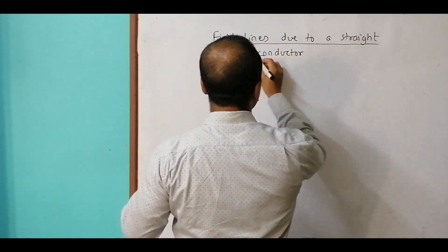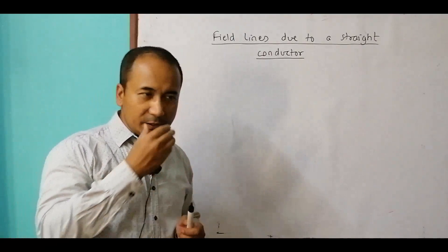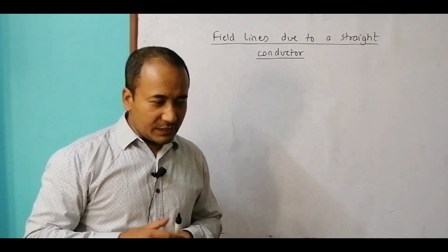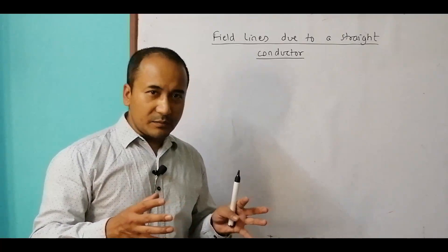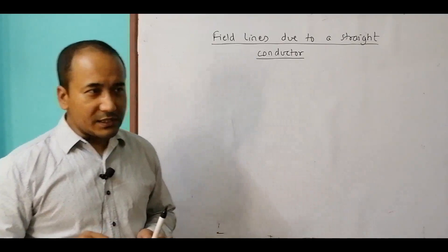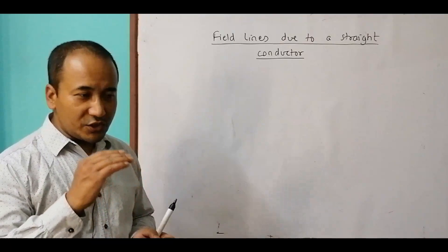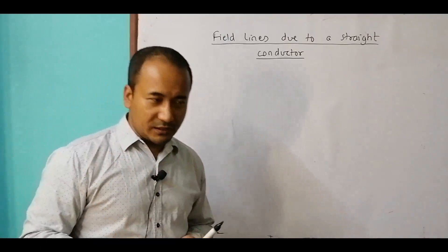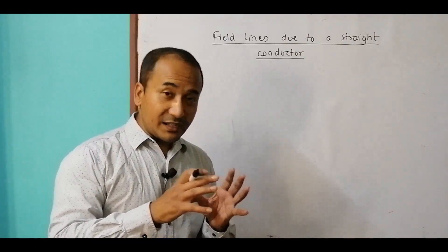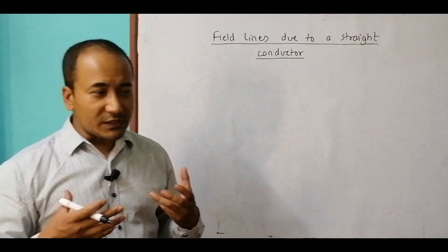This was first found by Mr. Oersted when he detected the magnetic effect of current. He was performing experiments on electricity; his devices were on the table and by chance he had a compass needle nearby. When he switched on the current, there was a change in the direction of the compass needle, and he concluded that there was a magnetic field in electric wires and found patterns for several types of conductors.